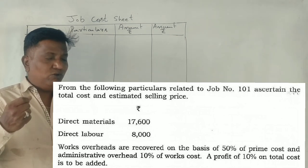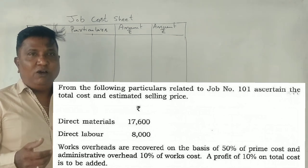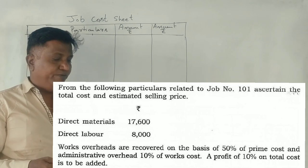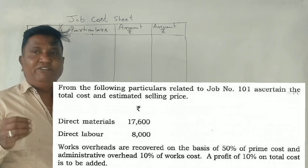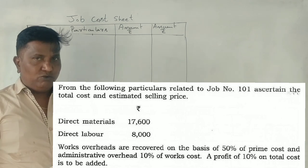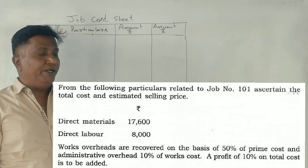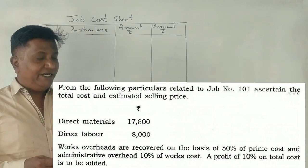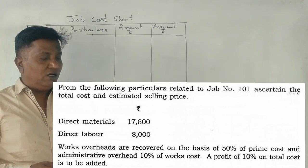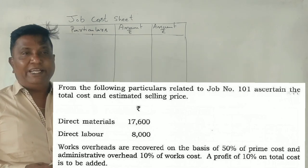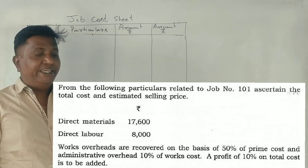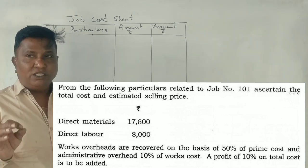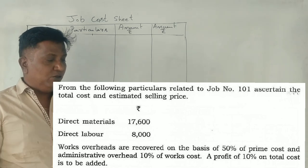From the following particulars related to job number 101, we need to ascertain the total cost and estimated selling price. Total cost and estimated selling price.